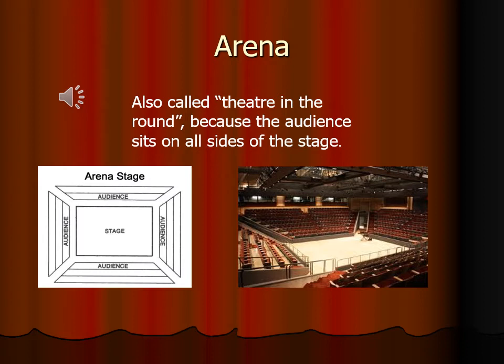To summarize the comparative elements for arena staging: one — actor-audience relationship is very intimate; two — limited stage scenery, nothing can obstruct view; three — you cannot hide scene changes and they can be difficult; four — audience focus can be diverted; five — best suited for a small cast show.